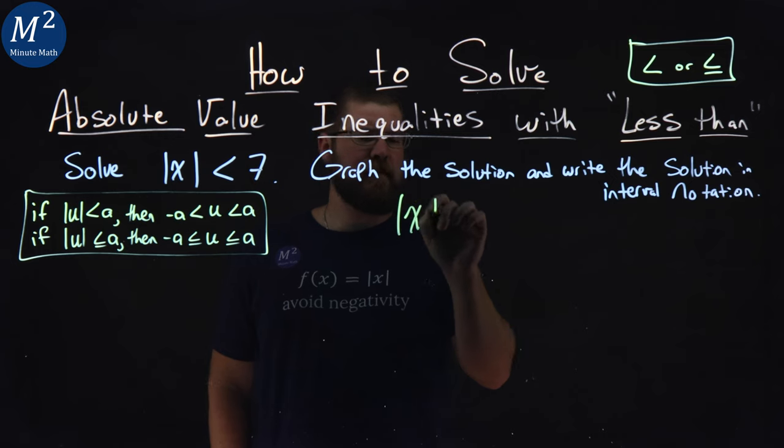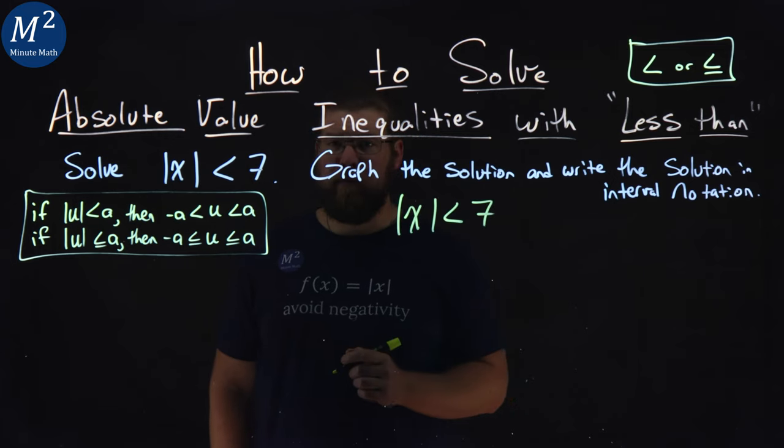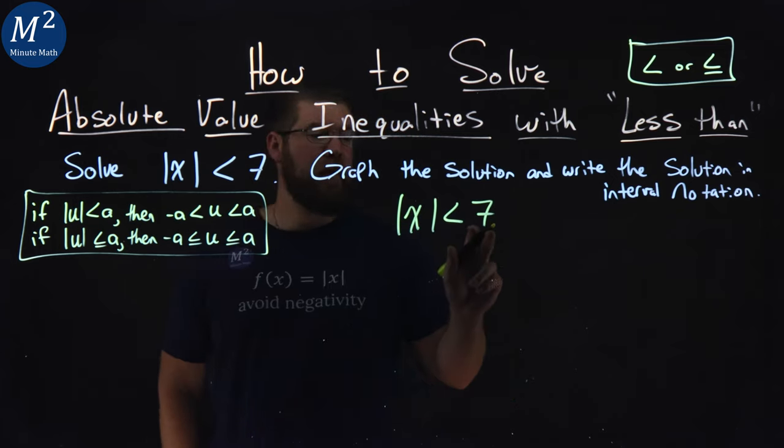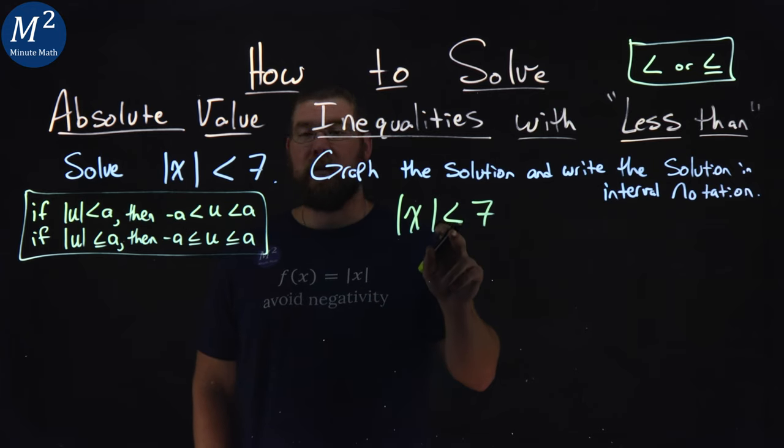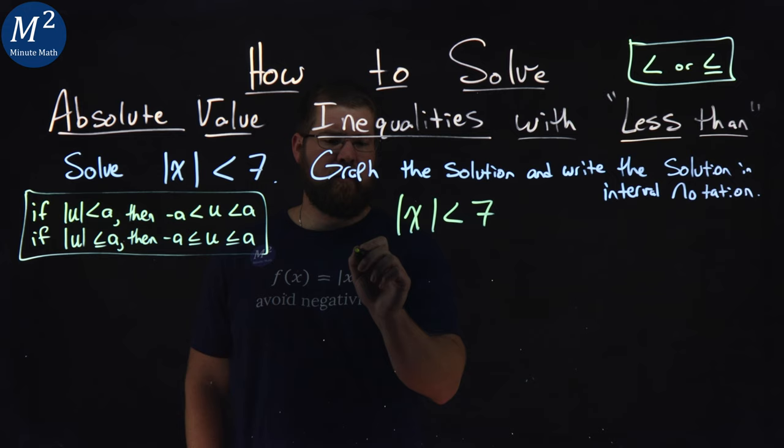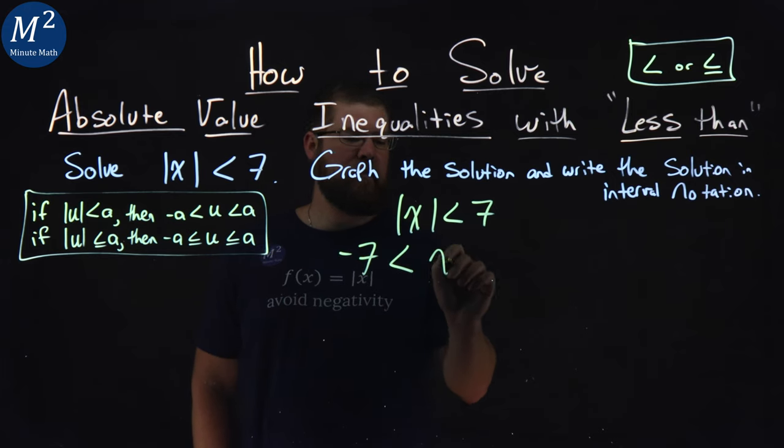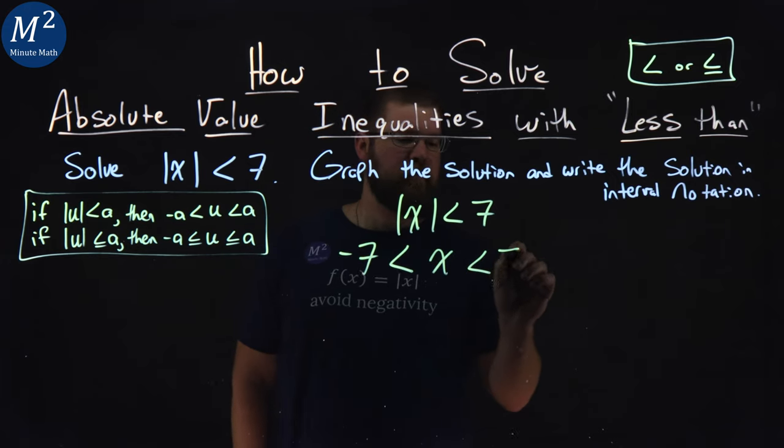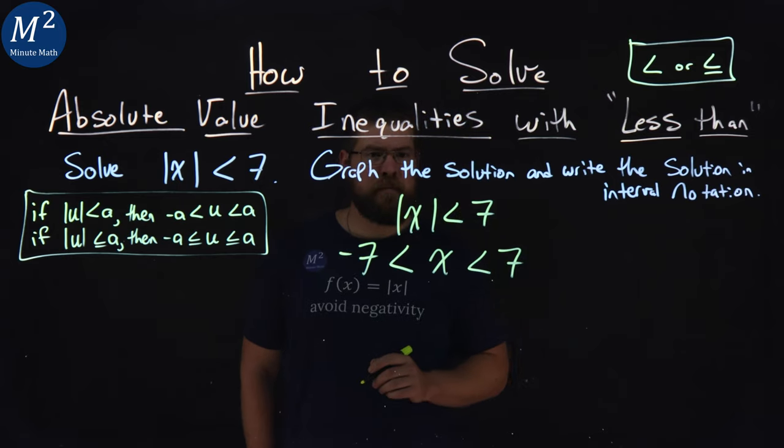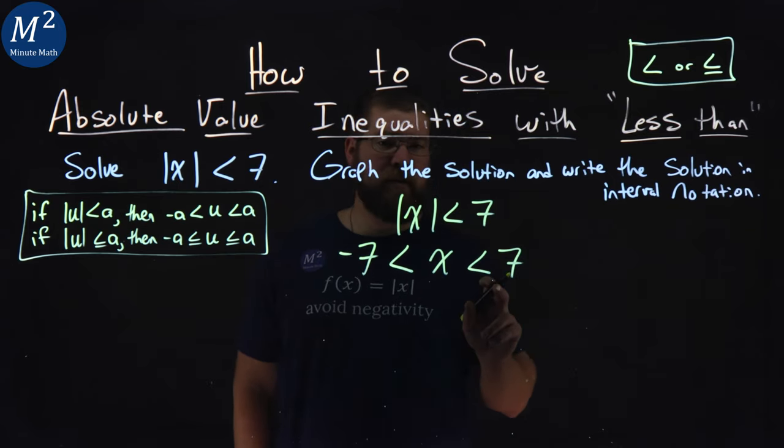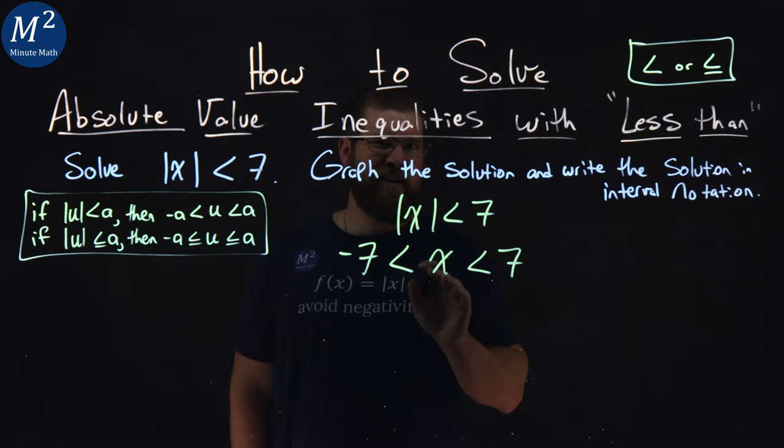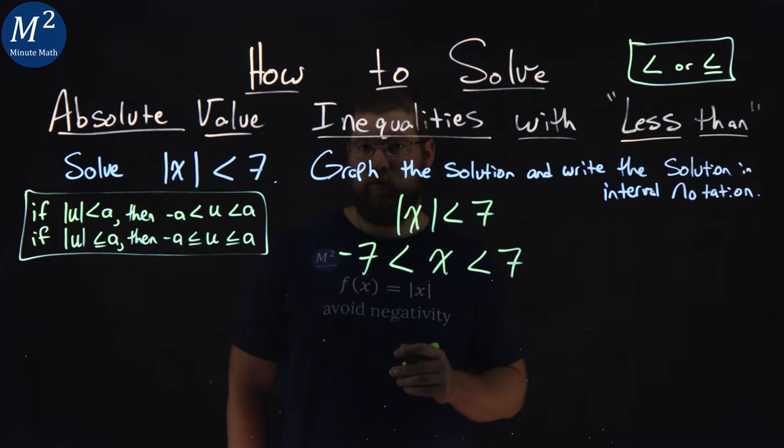Well, we'll start with the absolute value of x is less than 7. Our rules say our a value is 7 here, and we have the x here, which is our u, and we just have a less than sign. So they tell us that negative 7 here is less than x, which is less than a positive 7, which kind of makes sense. This is all the values in this range here where x can be to make our original statement true.